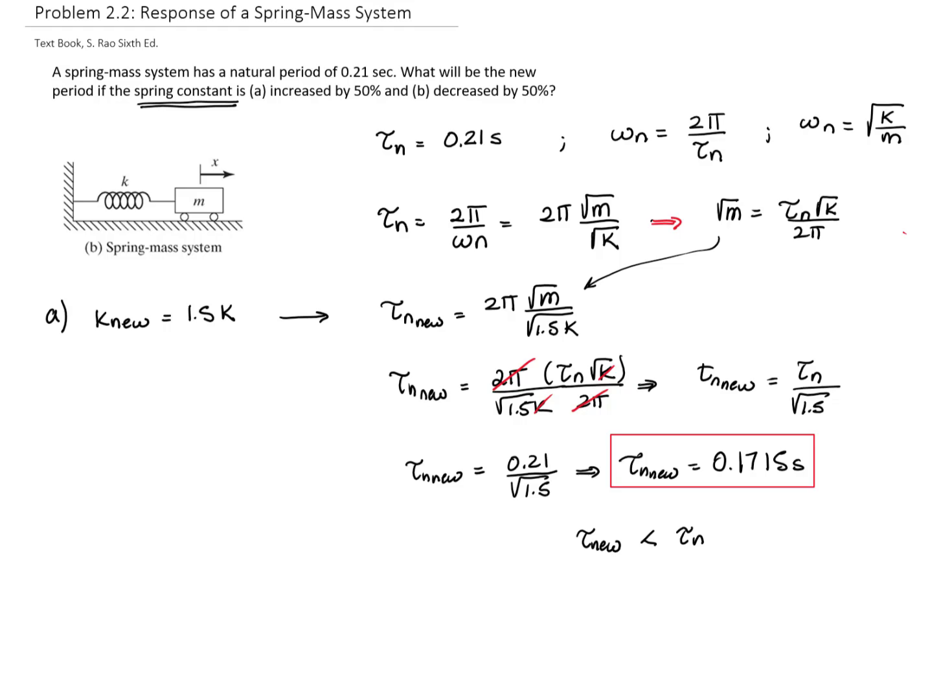We will use a similar approach for the second, and it says that it's 0.5K. This is part B, so the new period will be 2π times M, the same 0.5K.